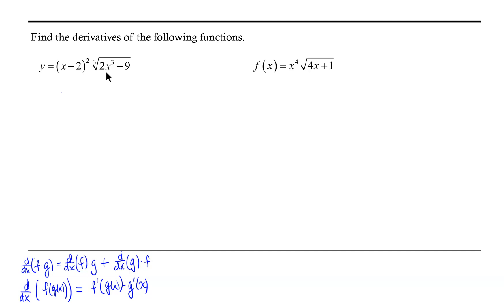Let's get started with the first function. We have y equals the quantity x minus 2 squared times the cube root of the quantity 2x cubed minus 9. In preparation for finding the derivative, we rewrite the cube root in exponent form: x minus 2 squared times 2x cubed minus 9 to the 1/3 power.